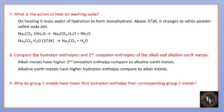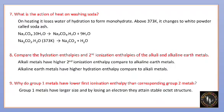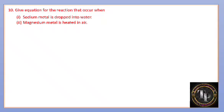Why do Group 1 metals have lower first ionization enthalpy than corresponding Group 2 metals? Group 1 metals have a larger atomic size, and by losing one electron they attain a stable octet structure, making it easier to lose that electron.